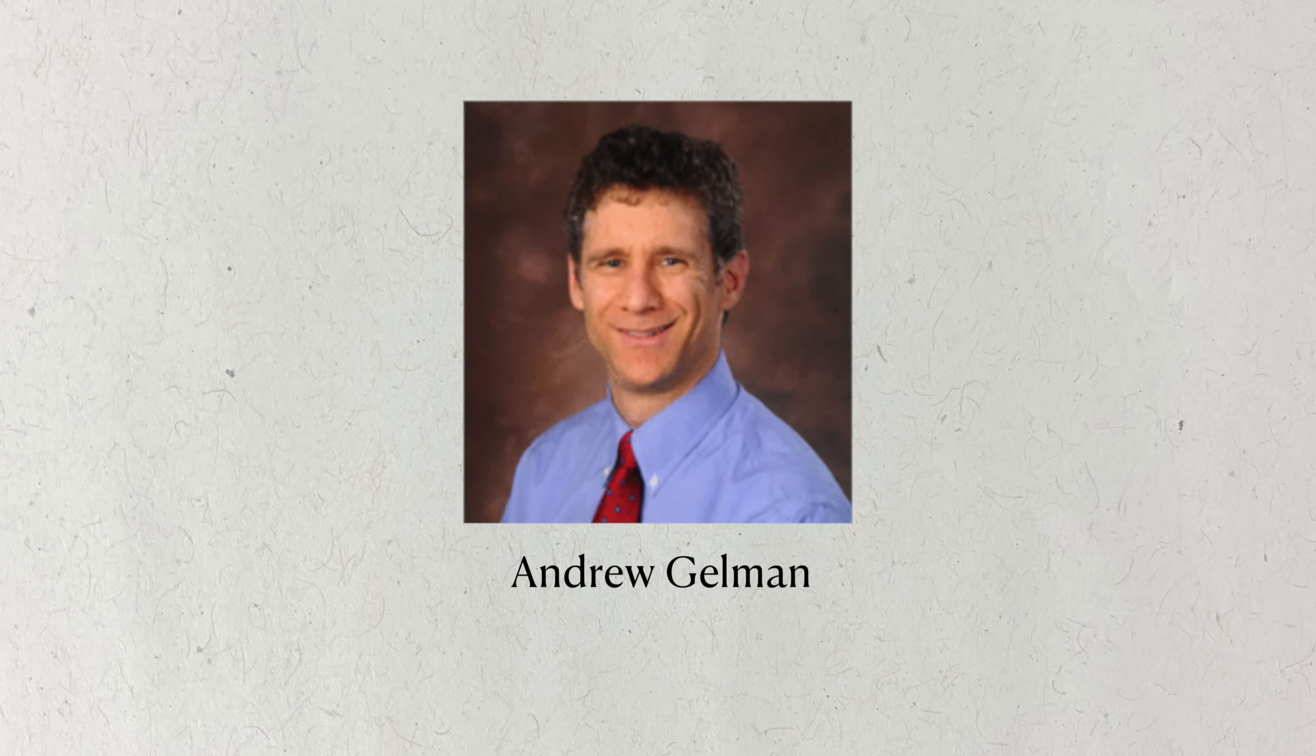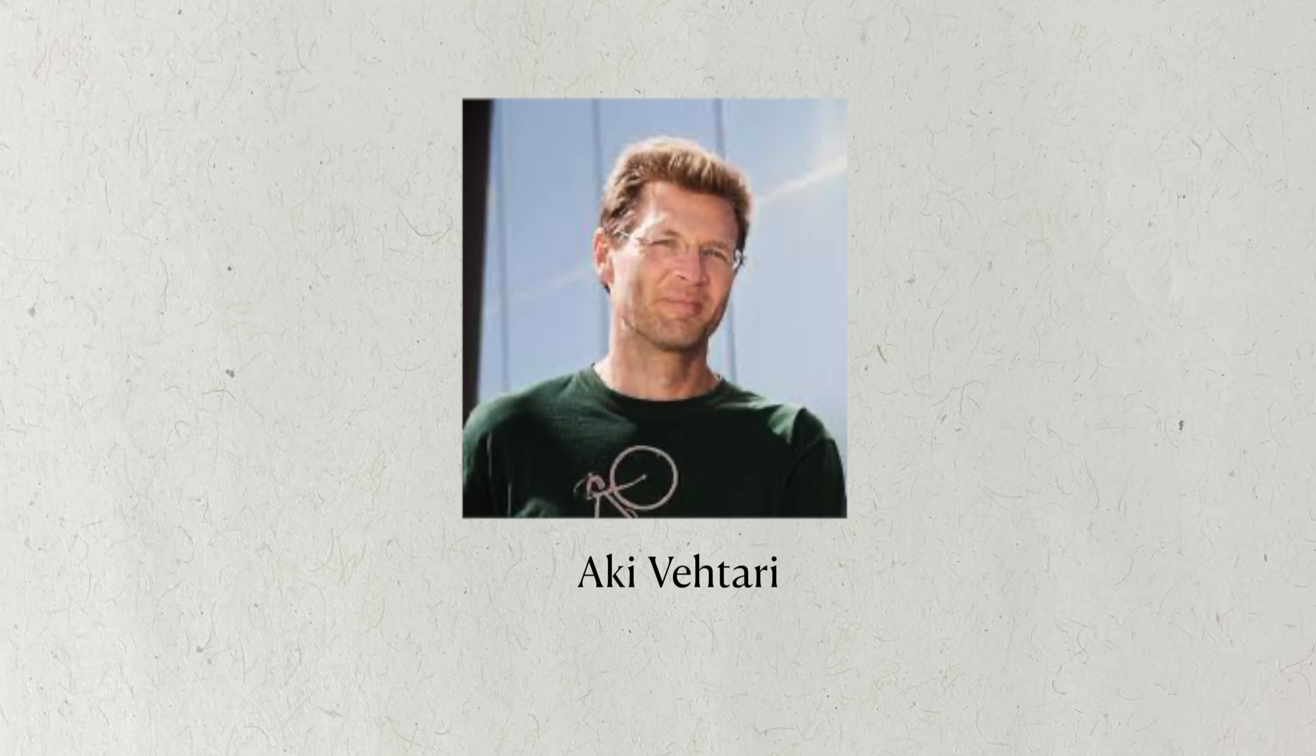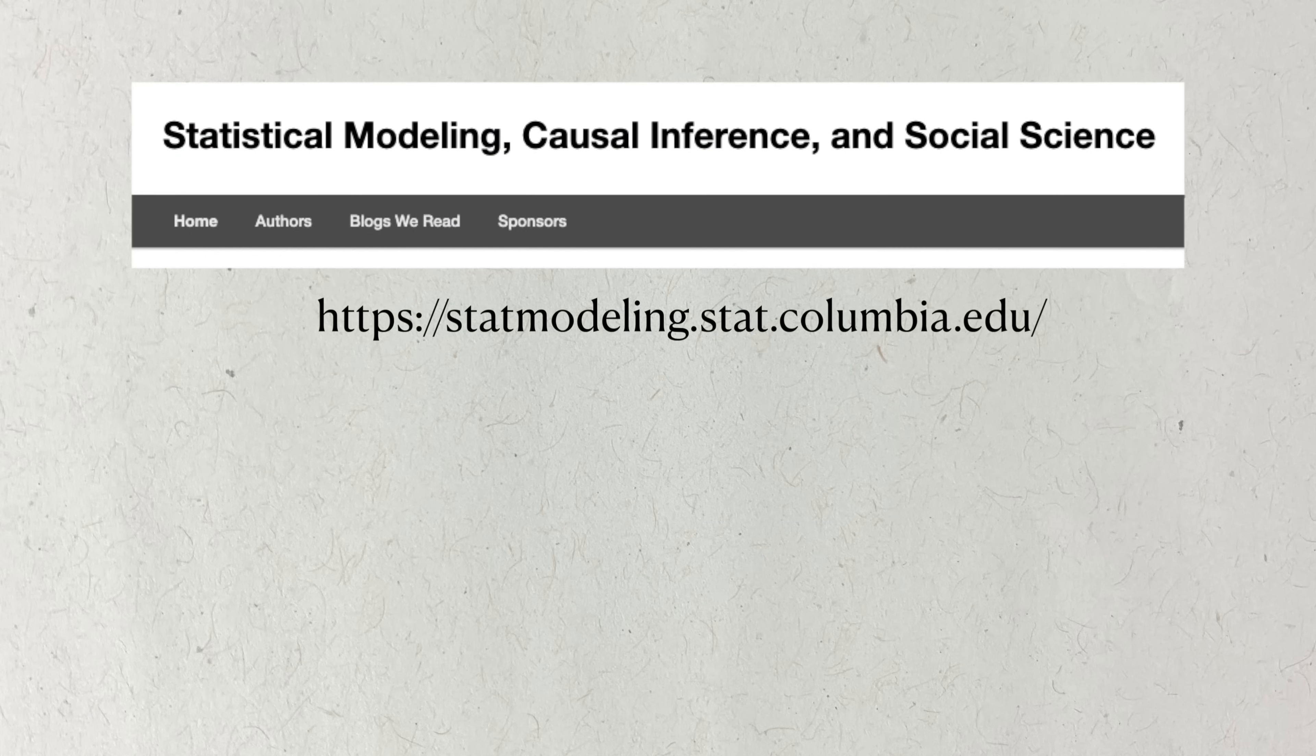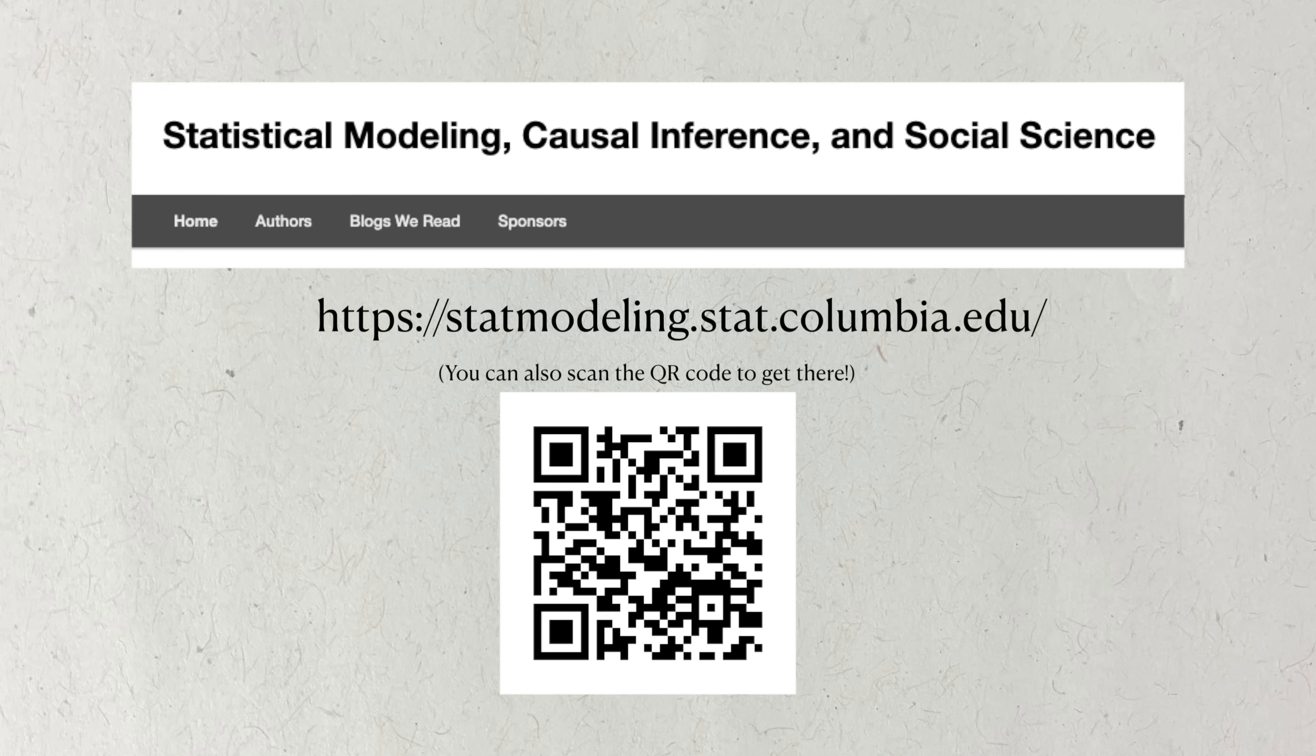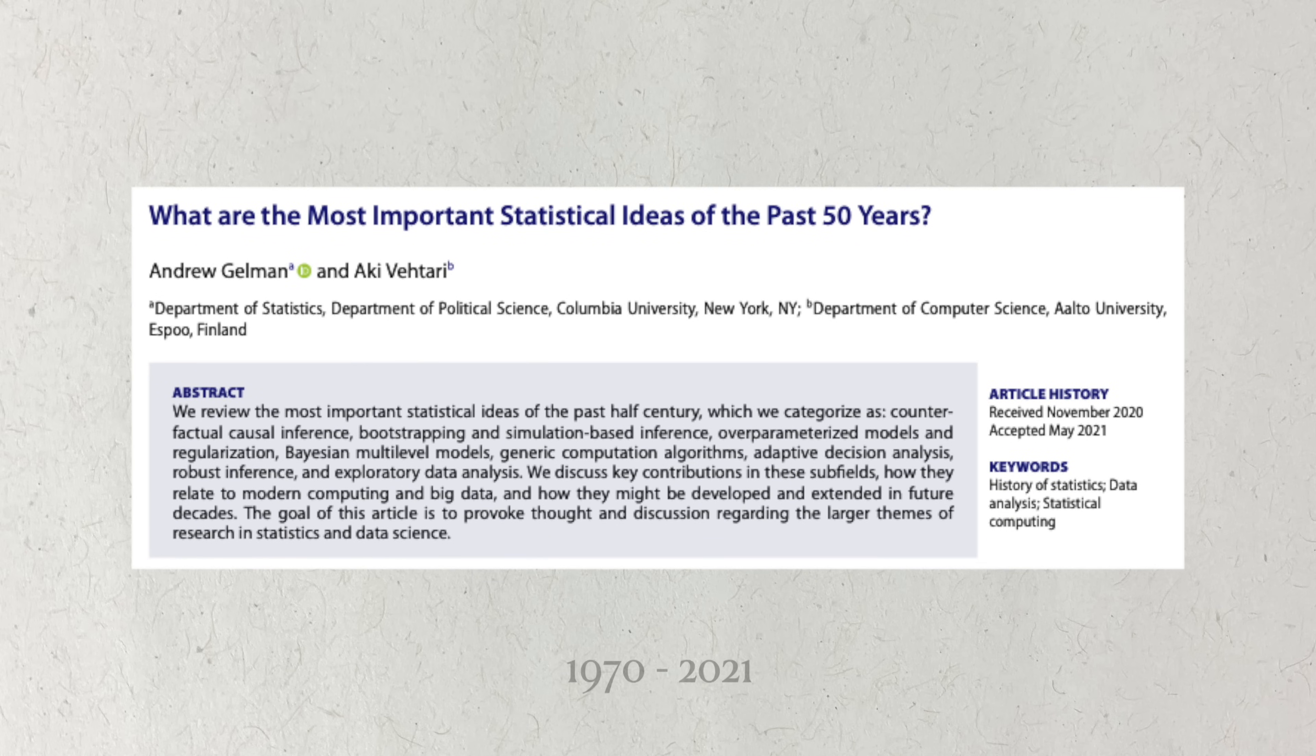As of the writing of this video, Andrew Gelman is a professor at Columbia University in both statistics and political science. Aki Vittari is a professor of computational probabilistic modeling at Alta University in Finland. Andrew Gelman also maintains a fantastic blog on statistics, political science, and their intersection, which I highly recommend. The article considers statistical innovations that happened from around 1970-2021. So this is the time period for which I call modern statistics. Without further ado, let's have a look at the list.